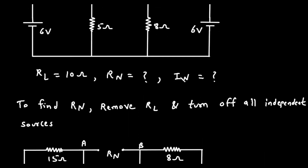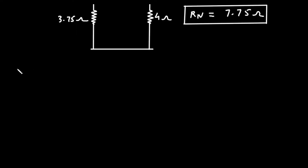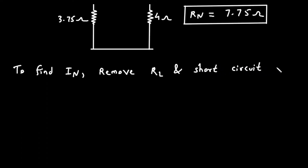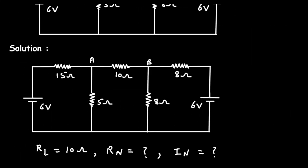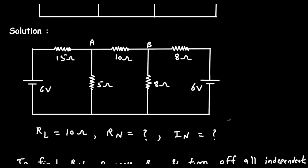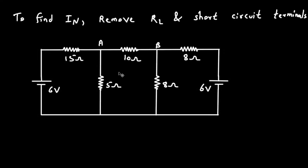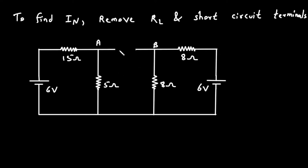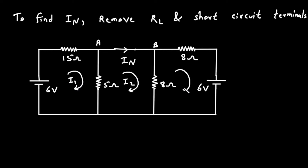Next, we have to find the value of Norton's current In. To find In, we will remove RL and short circuit the terminals. The current through this short circuit is In. To find this current, let's use mesh analysis. Let this be mesh 1 with current I1, mesh 2 with current I2, and mesh 3 with current I3.